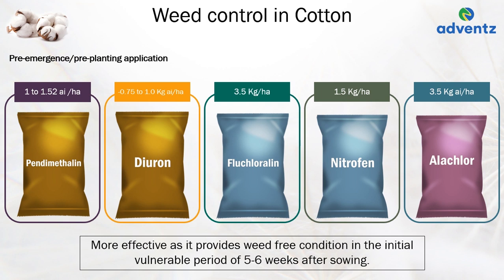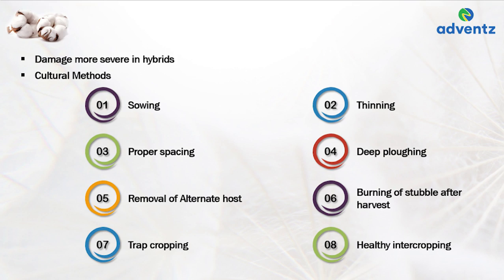The cotton crop is susceptible to a large number of insect pests. The incidence of insect damage is more severe in hybrid cotton than in varieties. Chemical control of pests alone is not sufficient. Cultural methods like appropriate time of sowing, thinning at proper time, proper spacing, deep ploughing, removal of alternate hosts, burning of stubble after harvest, and trap cropping or healthy intercropping are useful methods to reduce insect population or attack.